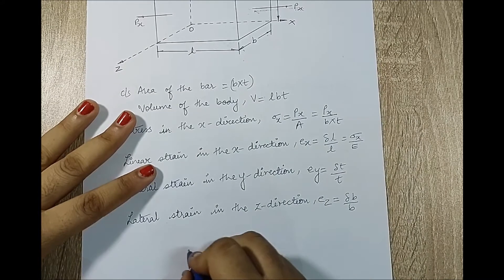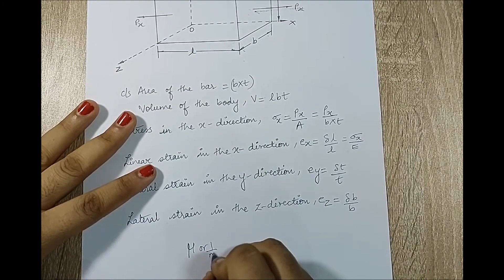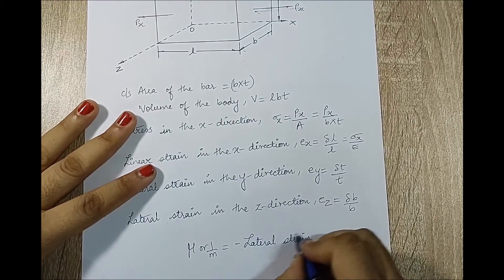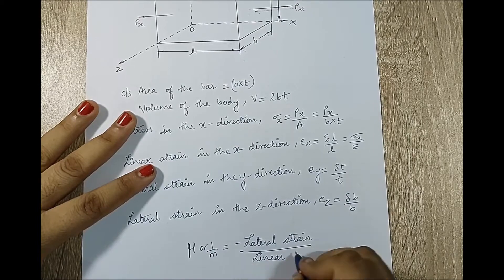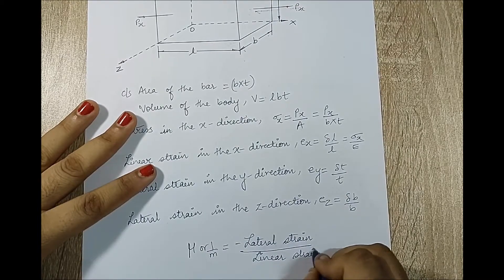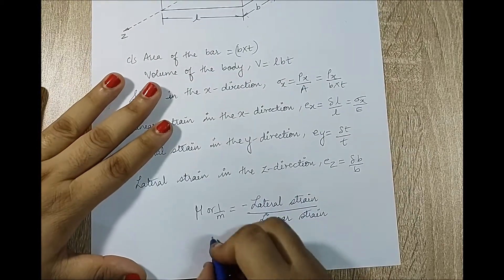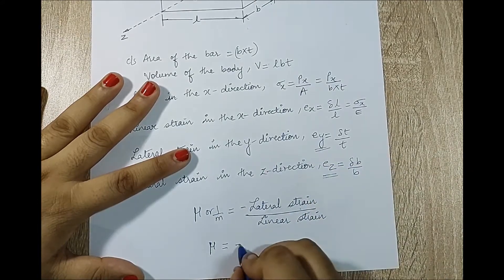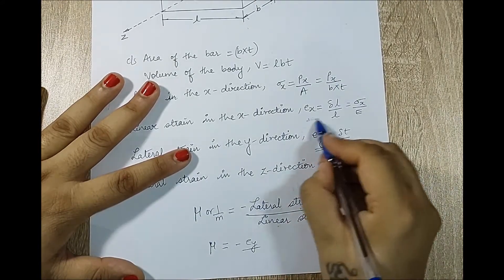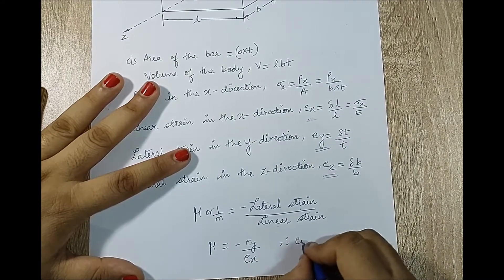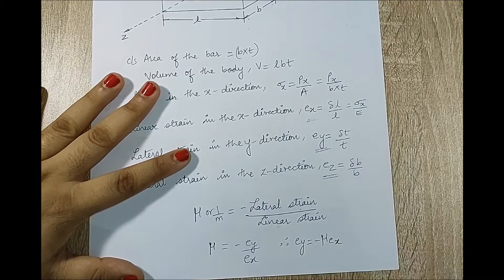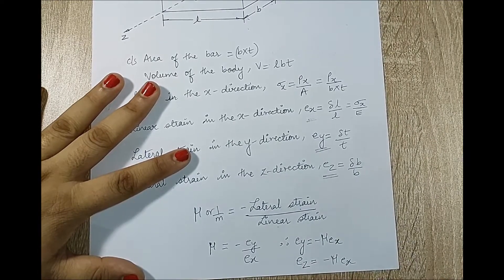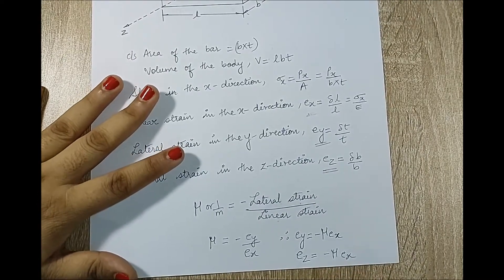We know Poisson's ratio μ, or 1/m, is minus the lateral strain divided by the linear strain. Using this formula, μ equals minus Ey upon Ex, therefore Ey equals minus μ·Ex. Similarly, Ez equals minus μ·Ex. So these are the two equations obtained.